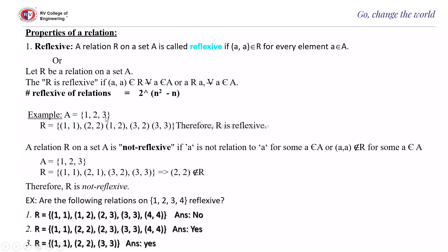Example: A = {1, 2, 3}. A reflexive relation R must contain (1,1), (2,2), (3,3). Other than these, it may contain additional elements. For example, if R contains (1,1), (2,2), (3,3), (1,2), and (3,2), then R is reflexive since all three diagonal pairs are present; the additional elements (1,2) and (3,2) are allowed.